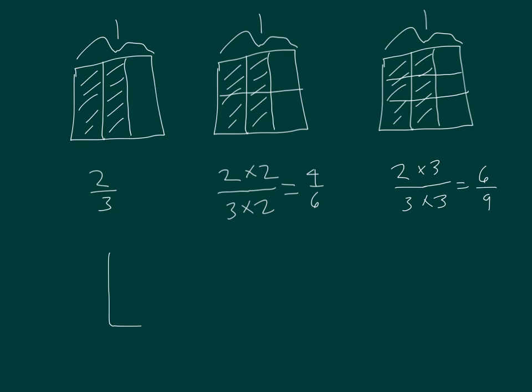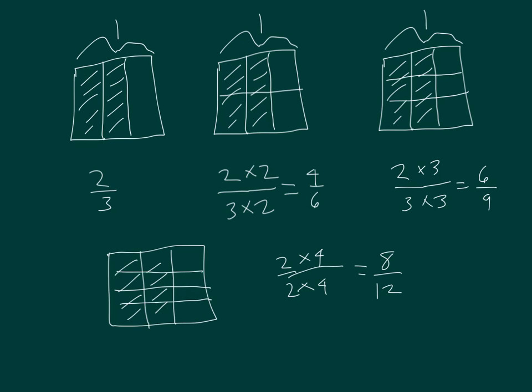I could do the same thing again, take 2 thirds and multiply by 4 in the numerator and denominator to be able to get 8 twelfths, as you see here. We have 1, 2, 3, 4, 5, 6, 7, 8 out of the 9, 10, 11, 12.